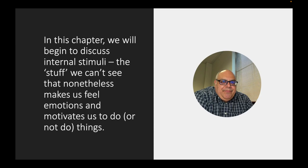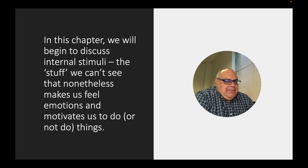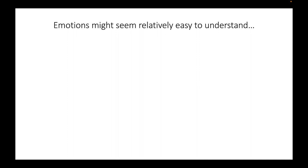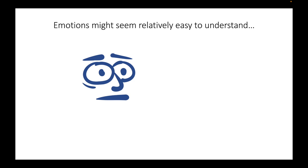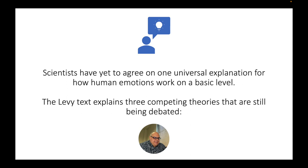In this chapter, chapter 4 of the Levy text, we're going to discuss internal stimuli — stuff that affects our behavior that we aren't necessarily aware is happening and often can't be observed by other people around us, but nonetheless has a significant effect on our emotional state and even on our motivations to do or not do certain things. Emotions might seem relatively easy to understand. Something scary happens and you get frightened; something good happens and you become happy. But really, human emotion is much more complex than that.